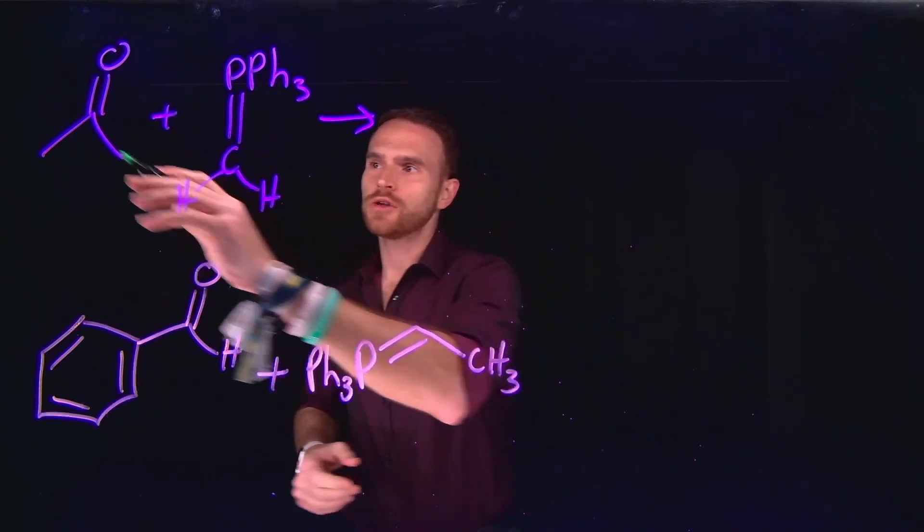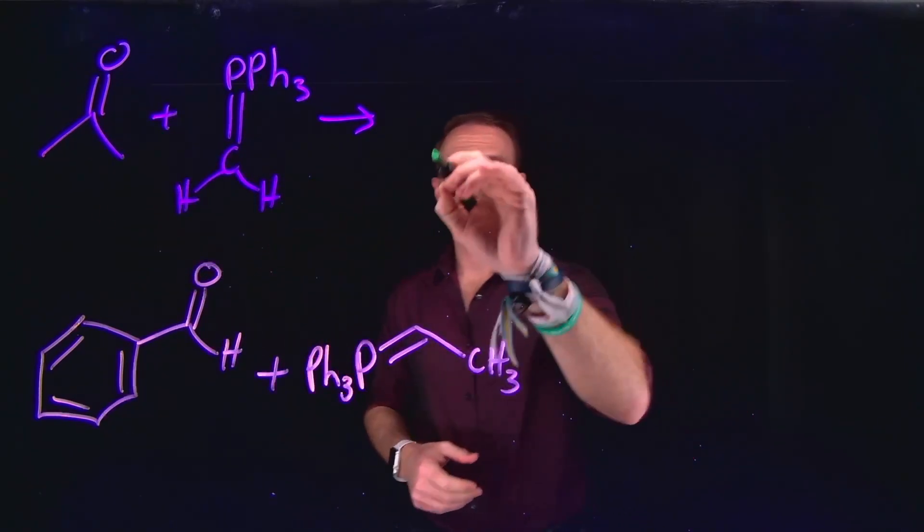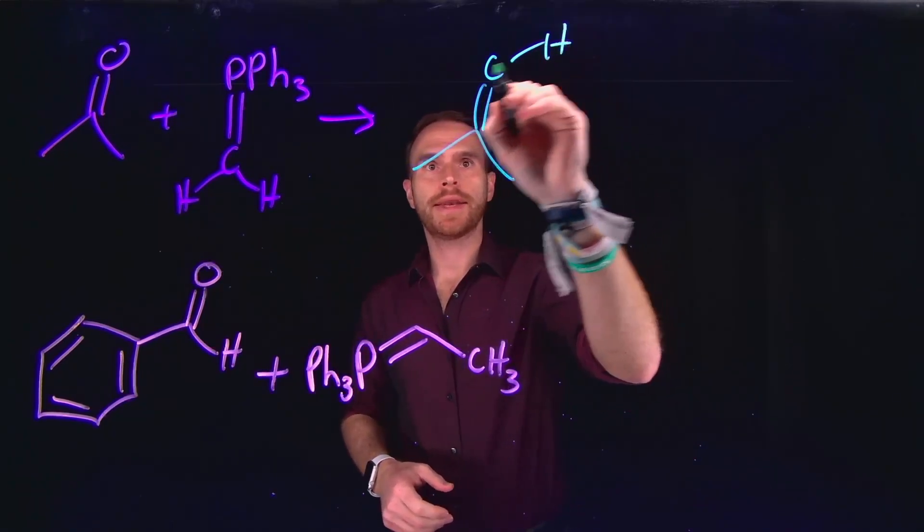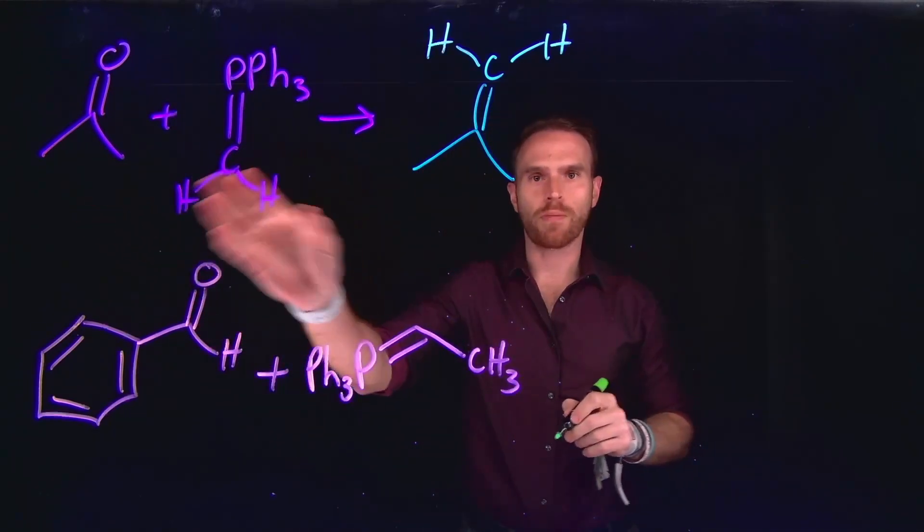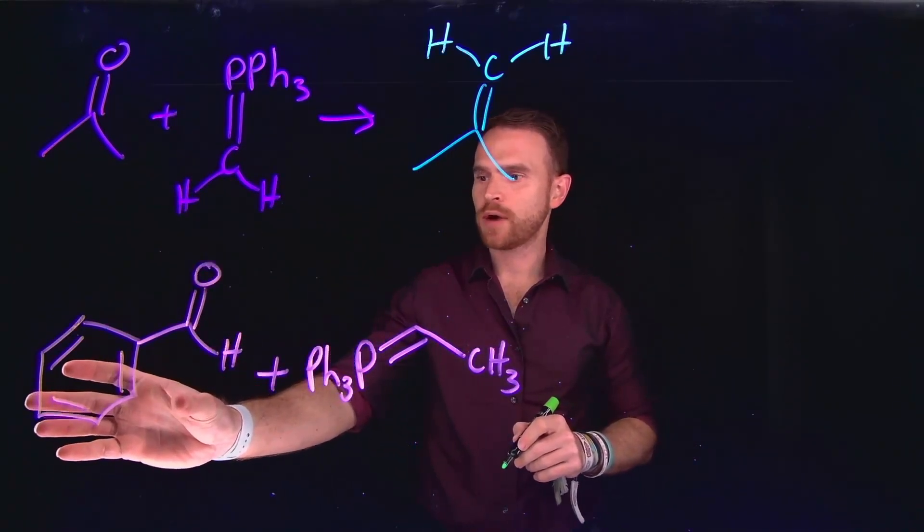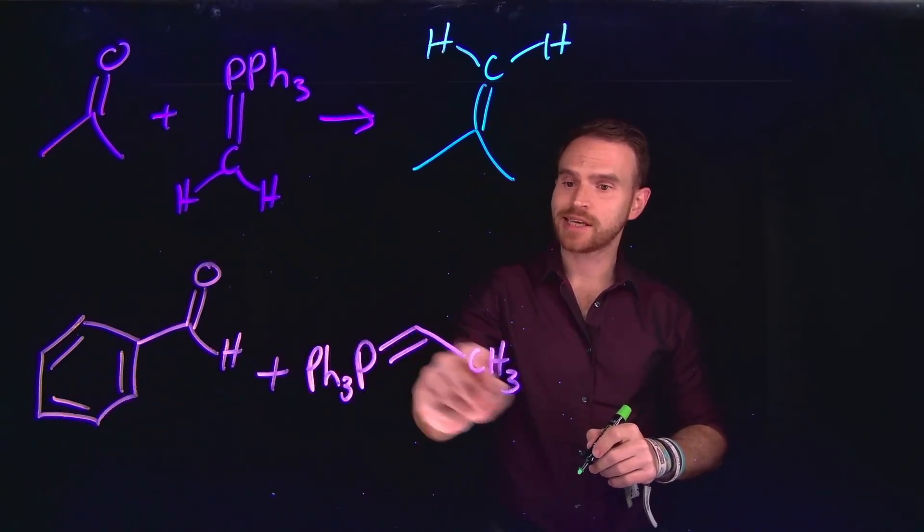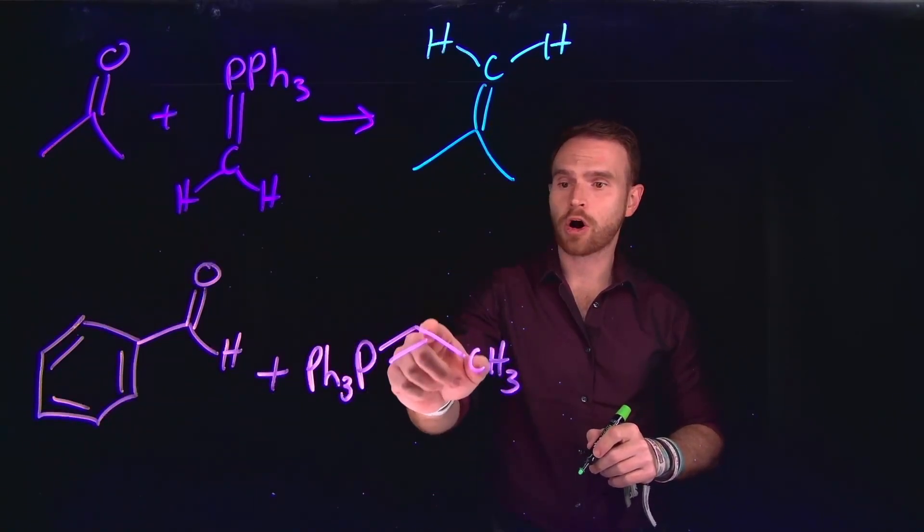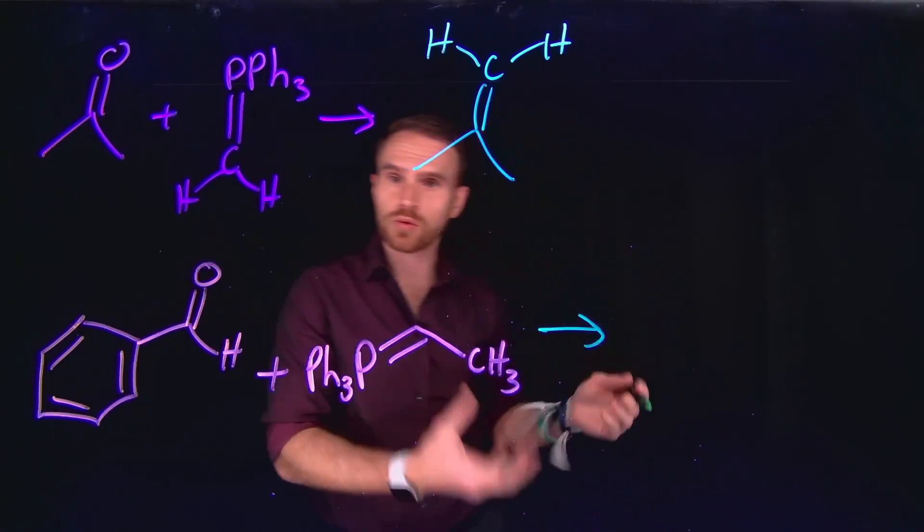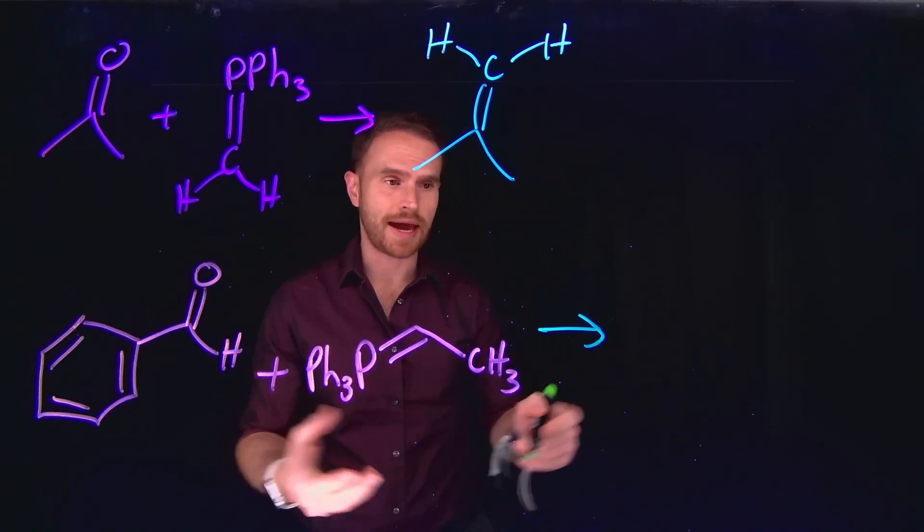Now, the reaction we just saw used a symmetrical carbonyl and a symmetrical Wittig reagent to produce, ultimately, a symmetrical alkene. Importantly, we don't have to use symmetrical molecules as our starting reagents. Take a look, for example, if you had benzaldehyde reacting with this Wittig reagent, which contains a single methyl group coming from the carbon that is doubly bound to the phosphorus atom. This would produce two different options. We can produce the E and Z isomers of the alkene.